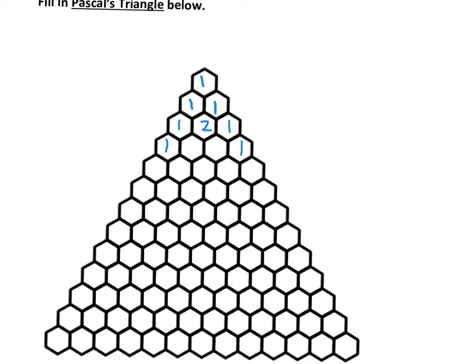Always 1s on the outside. I see a 1 and a 2 next to each other, so underneath that should be a 3. I see a 2 and a 1 next to each other, so underneath that in the middle should be a 3. 1s on the outside. 1 plus 3 makes 4, 3 plus 3 makes 6, 3 plus 1 makes 4.